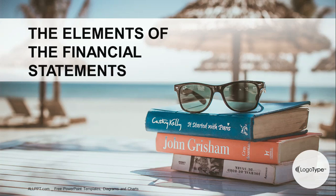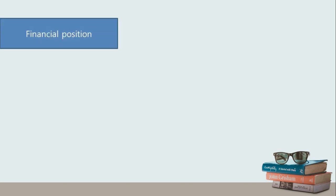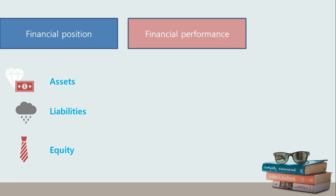We have come to one of the lengthier chapters of the framework: the elements of financial statements. There are basically five elements of the financial statements — three of which pertain to financial position, such as assets, liabilities, and equity — while the remaining two refer to financial performance, such as income and expenses.